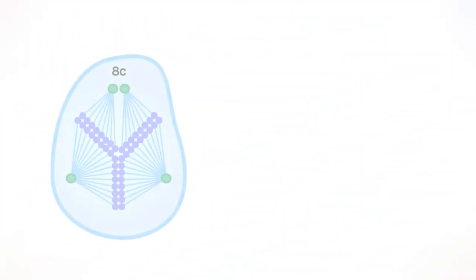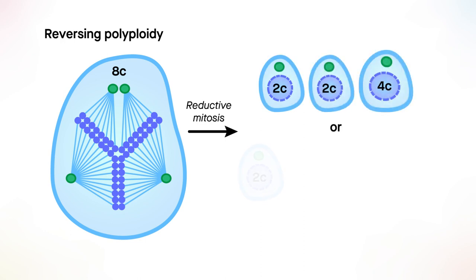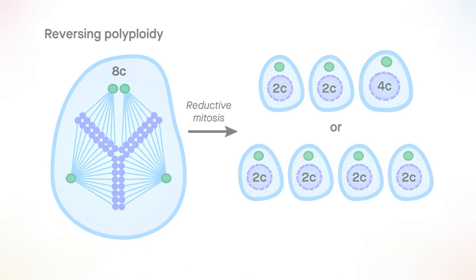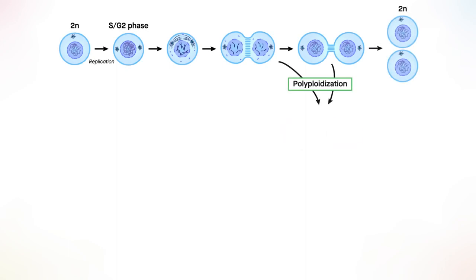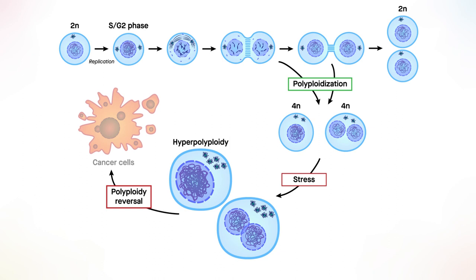Interestingly, the team discovered that the process of reversing polyploidy, where the DNA content of cells is reduced, was a critical step in turning hyperpolyploid hepatocytes into cancer cells. These findings offer new insights into the role of genome content switching in the biology of liver cancer.